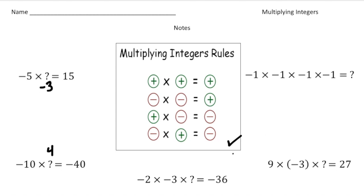Here we have negative two times negative three times blank equals negative 36. It's important to always multiply two numbers at a time. Negative two times negative three — a negative times a negative is a positive — gives us six. Then six times what equals negative 36? It has to be a negative, so the answer is negative six.